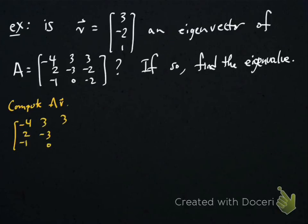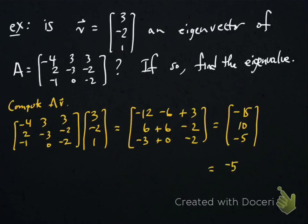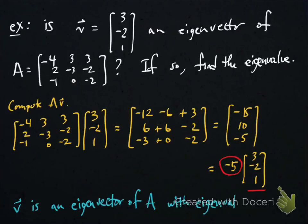So we just need to compute A times V, and that's the matrix vector product. We just compute it and get [-15; 10; -5], which we notice is -5 times the vector [3; -2; 1] that we were given. So it's 5 times the vector itself, which means V is an eigenvector of A with eigenvalue 5.